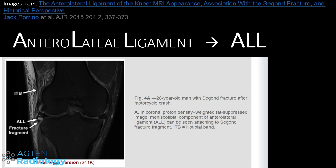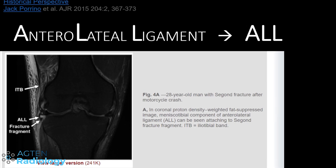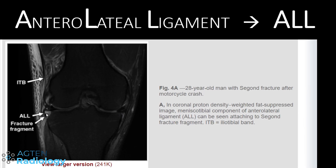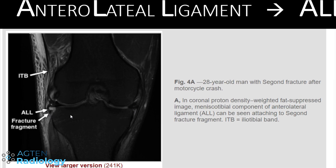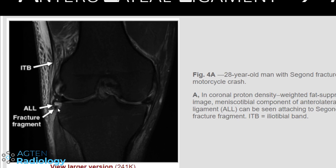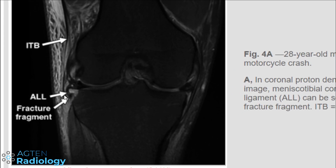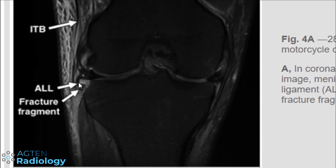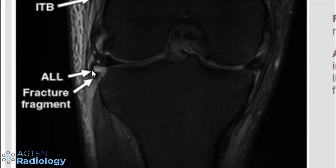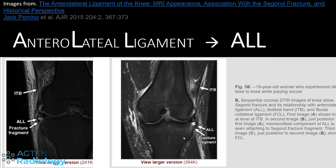Once this anatomic publication was out, the radiology literature followed up with descriptions of this ligament. This is from an article in AJR 2015 — you can see a Segond fracture or avulsion fracture after a motorcycle crash, with an arrow pointing to the ALL. I also have the link to this publication in the description below. In a second patient the fracture is less obvious but you can still see the ALL running right there.